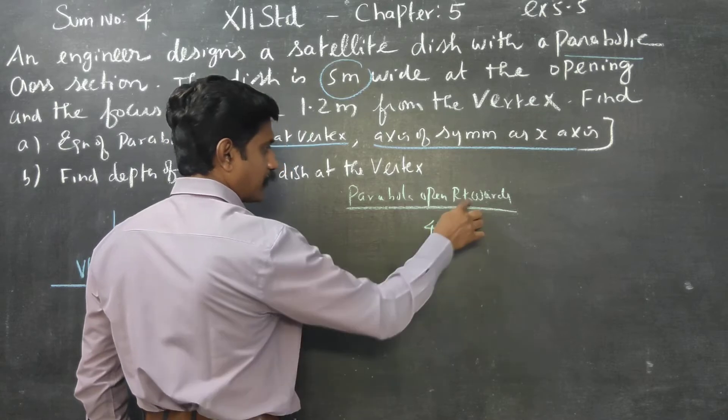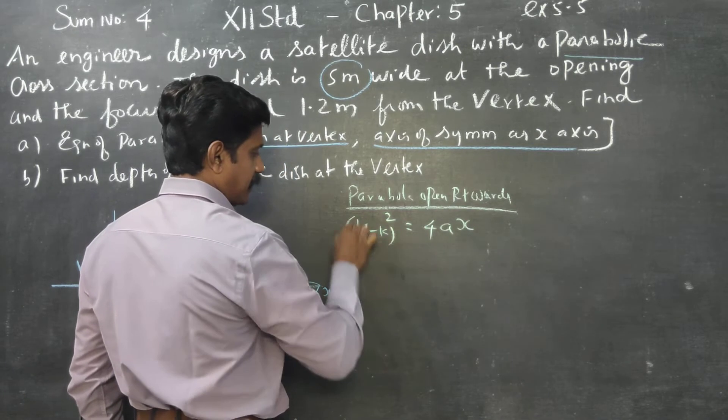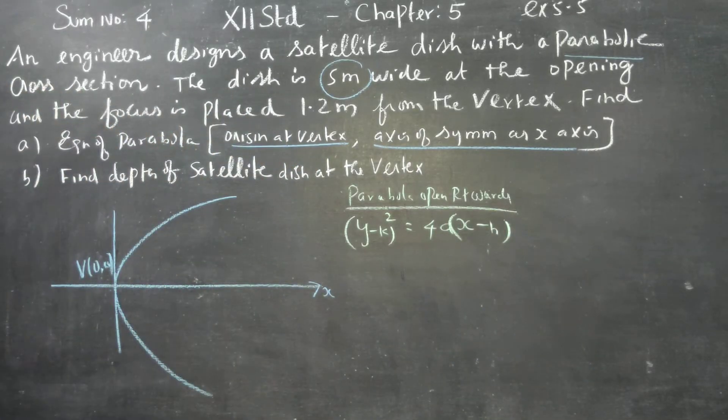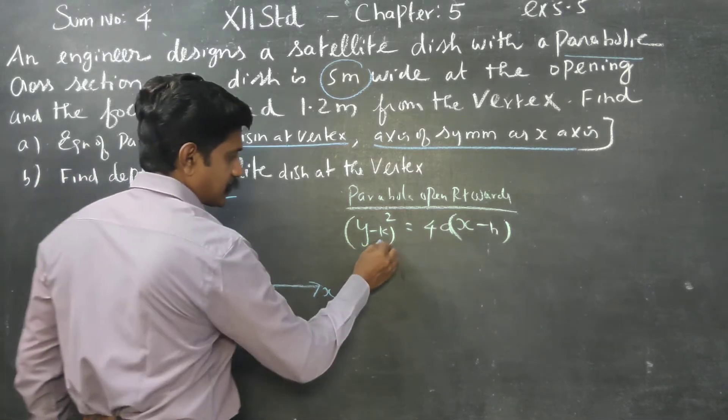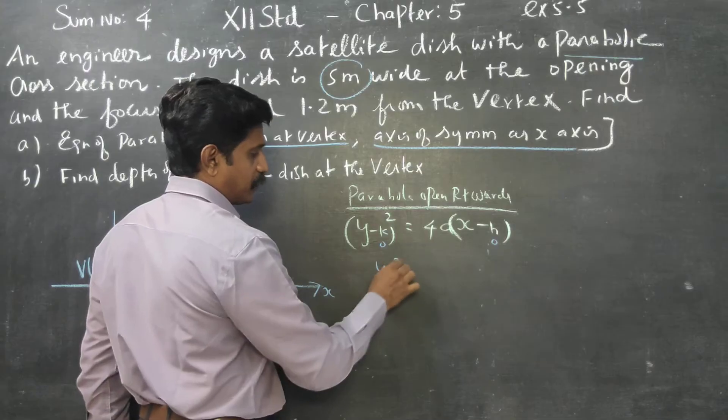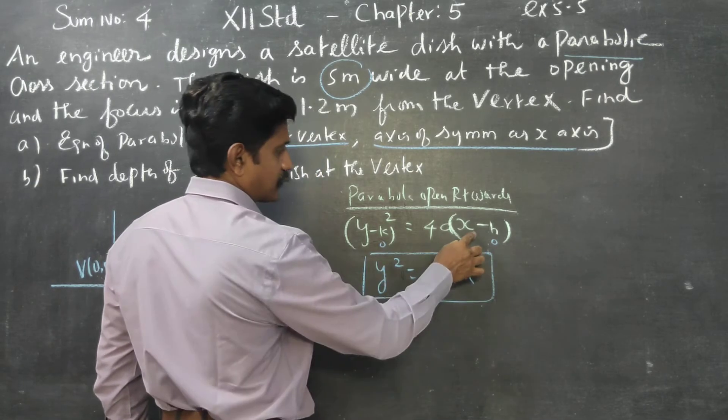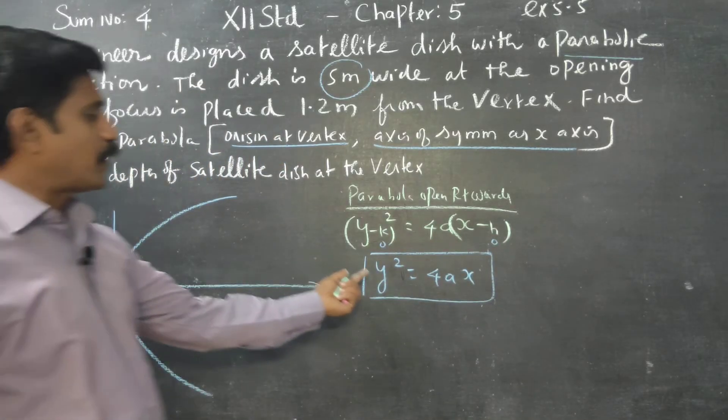What will be the equation? Symmetry on x-axis. Y square minus k is equal to 4a times x minus h. This is the equation of parabola, but my vertex is zero comma zero. Since h comma k is zero, our answer will be y square is equal to 4ax.